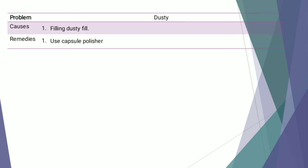The next defect is dusty. This problem arises because of filling dusty fill. The remedy is to use a capsule polisher — once the capsule is filled with a dusty fill, it has to be polished in order to get rid of the dust.